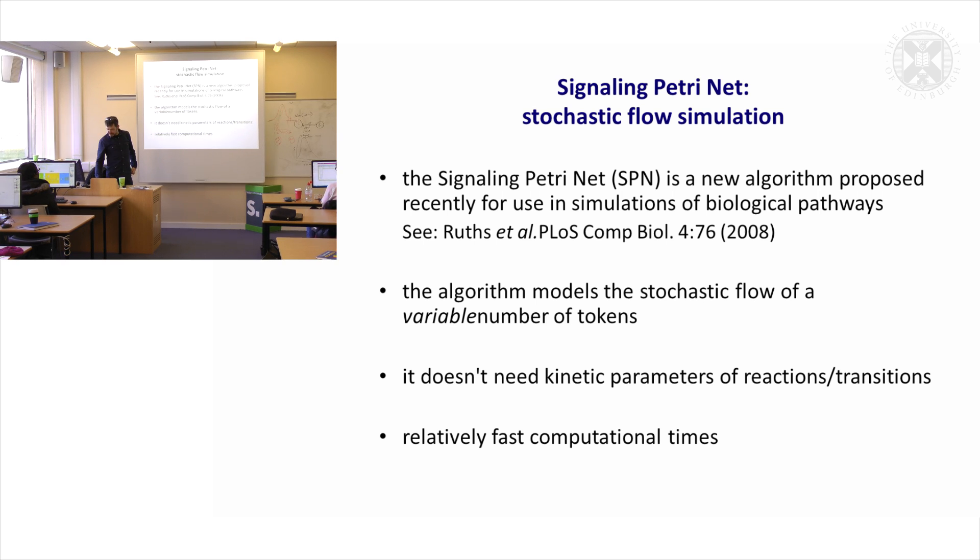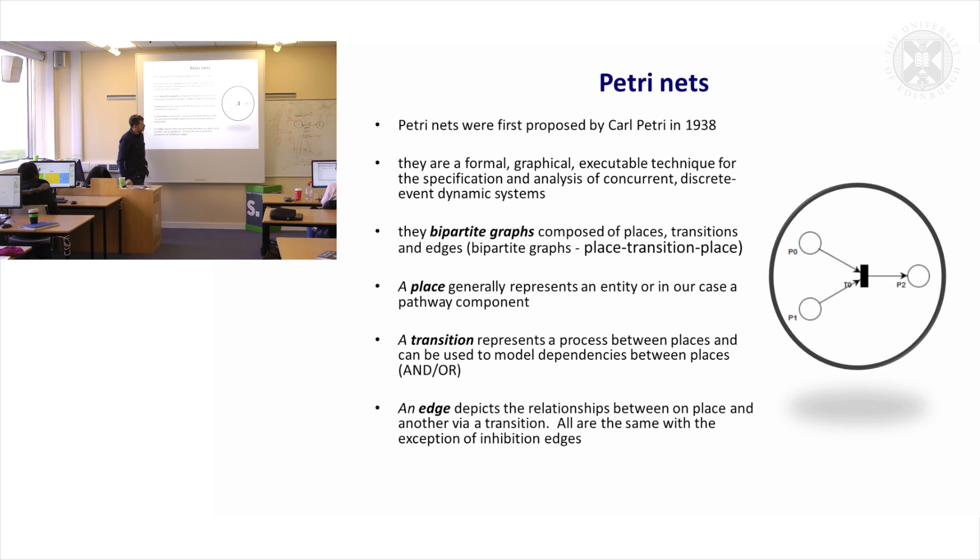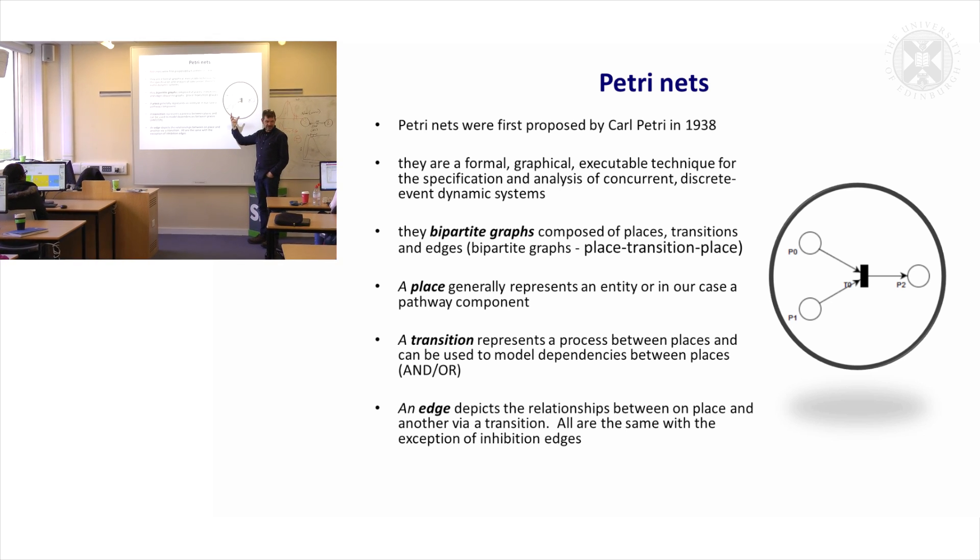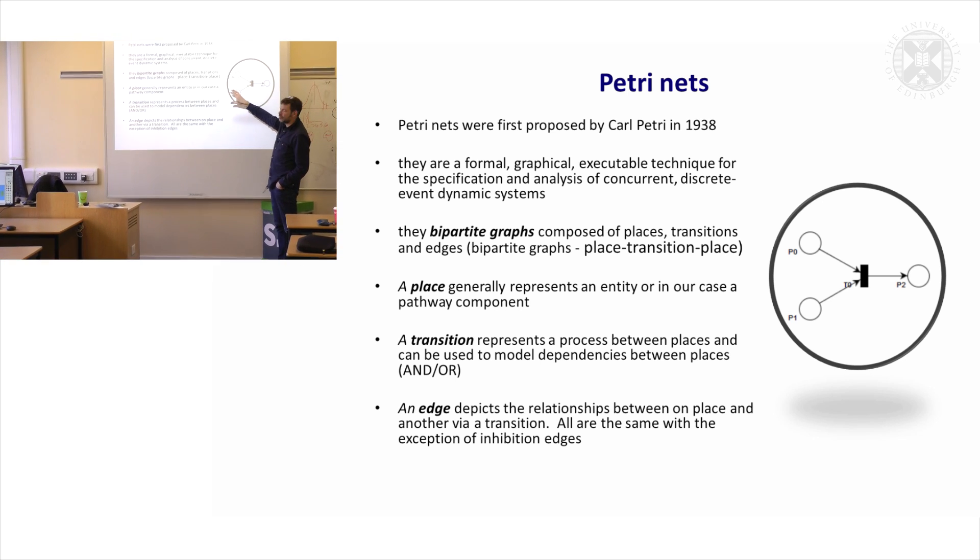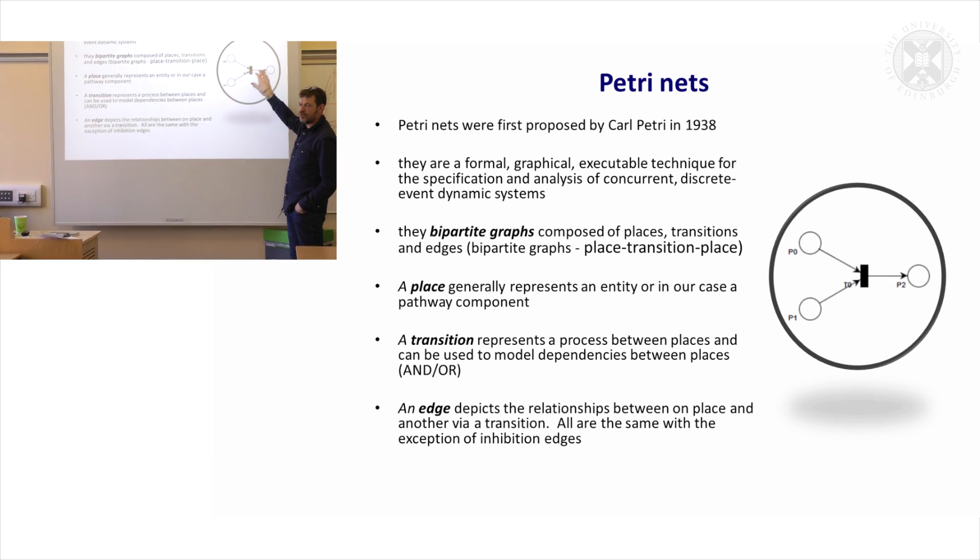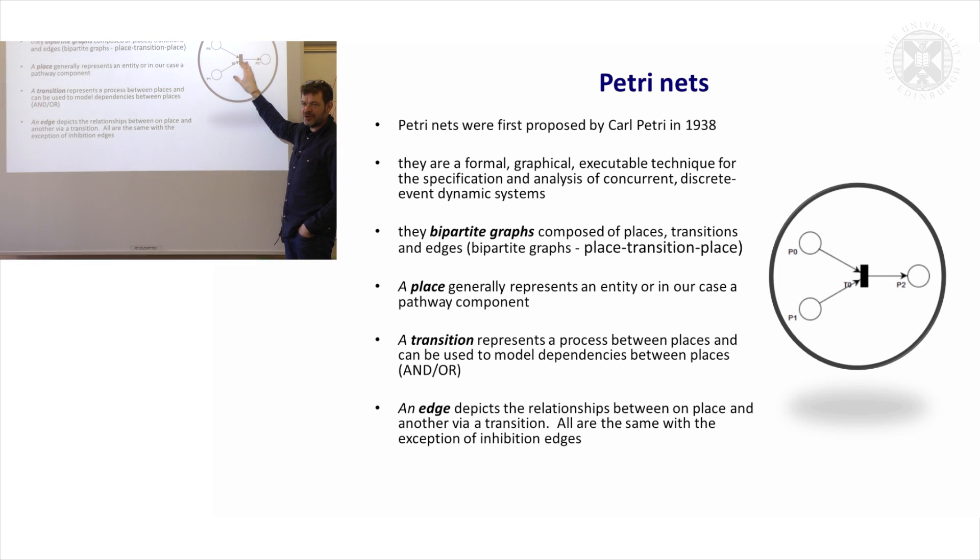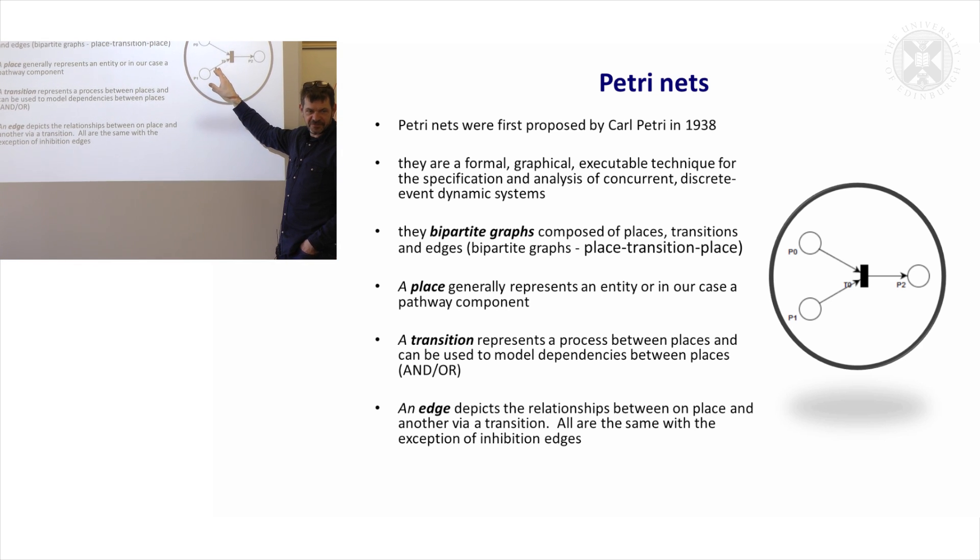Basically it models the flow of tokens. So in all of these Petri nets, what you're assuming is a token is the amount representing the amount or activity of a given entity. If this has tokens, it exists. The more tokens that you have on this place, the more of it there is in reality. And what we're going to do in Petri nets is we're going to move tokens from one place to another based around the topology of the graph itself.